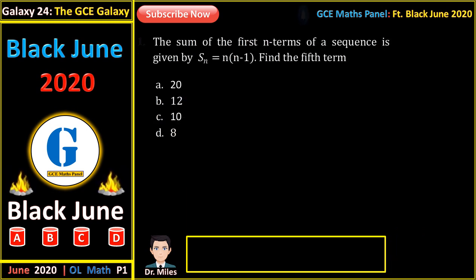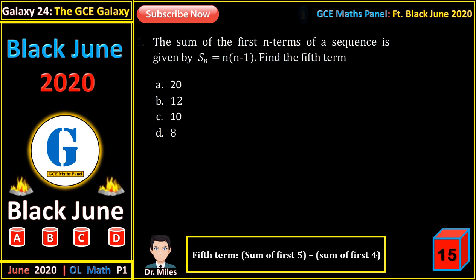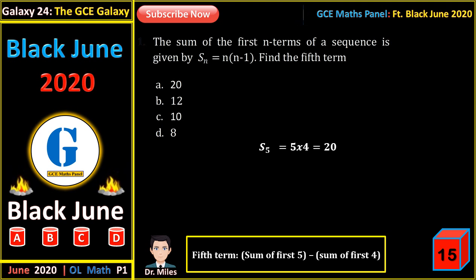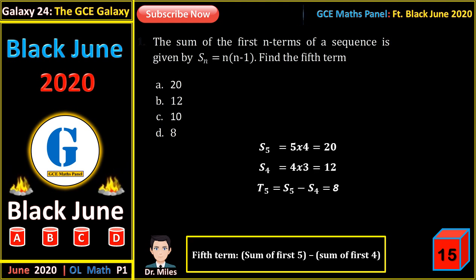The sum of the first n terms of a sequence is given by Sn. Find the fifth term. The fifth term equals the sum of the first five terms minus the sum of the first four terms. The sum of the first five terms is 5 times 4; the sum of the first four terms is 4 times 3. The difference is 8, so the fifth term is 8.